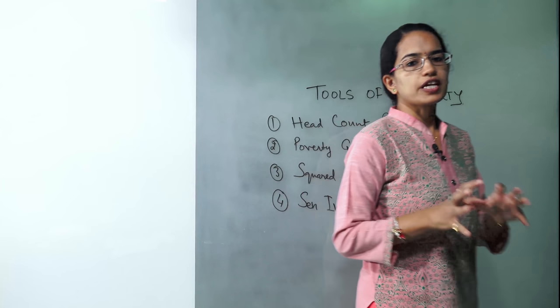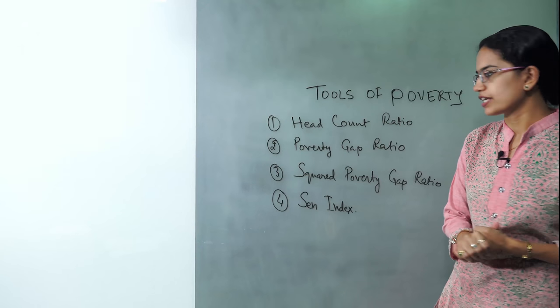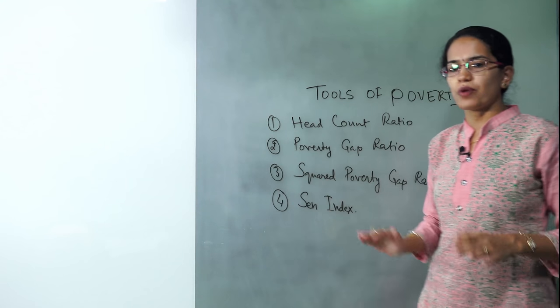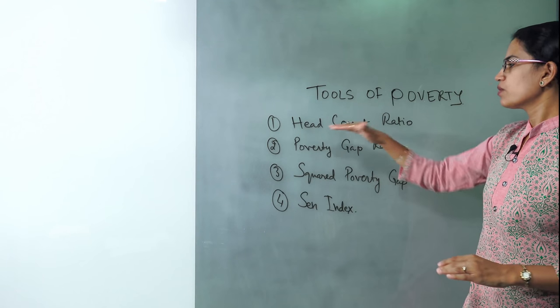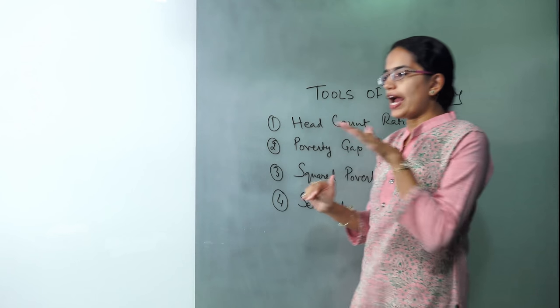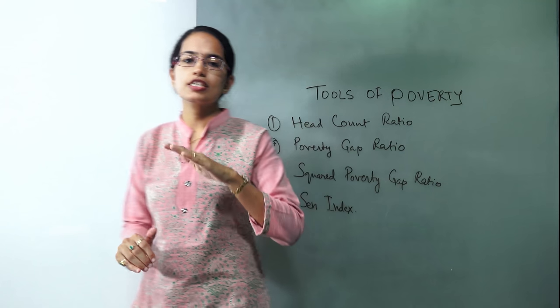We would understand the various tools for measuring poverty. Now these four are the most important tools that are commonly used. Let's understand them one by one. What is head count ratio? Head count ratio is the percentage of